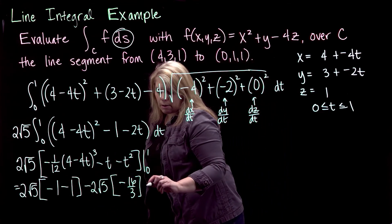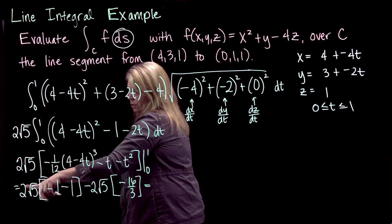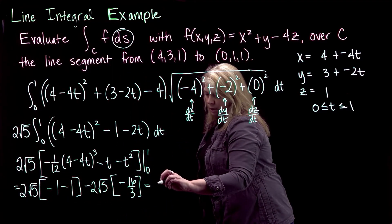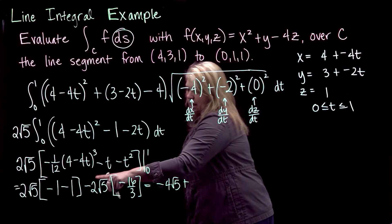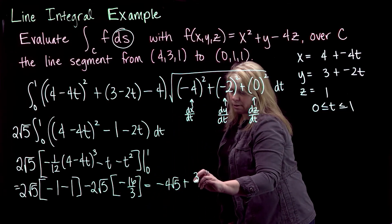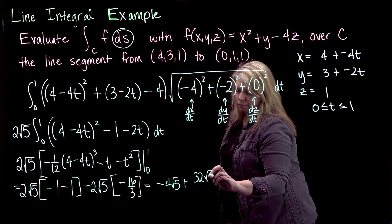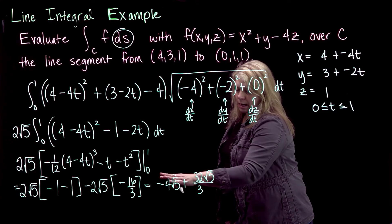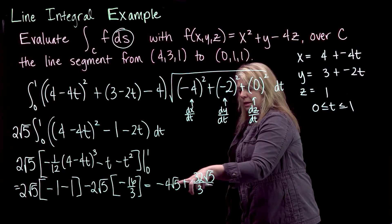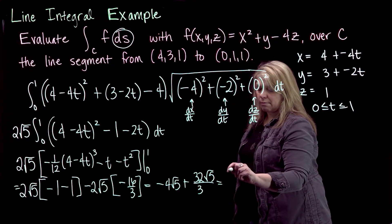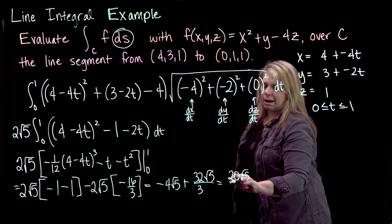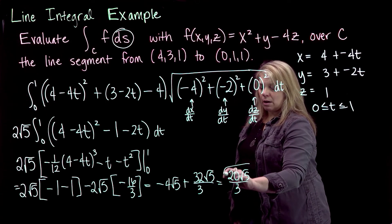So we can go ahead and simplify that here. We'll have a negative 2 times 2√5, so negative 4√5 plus 32√5 over 3. And if you want to get a common denominator here, it would be 3, so negative 12√5 over 3 plus 32√5 over 3 would be 20√5 over 3.